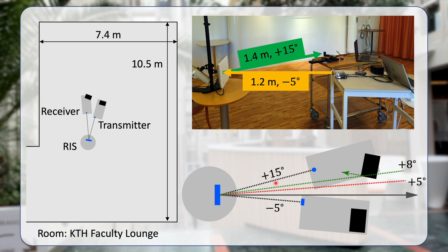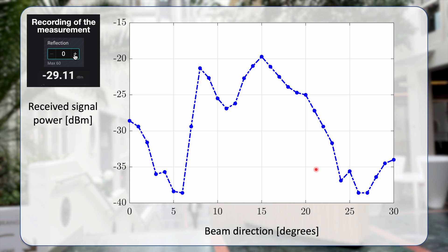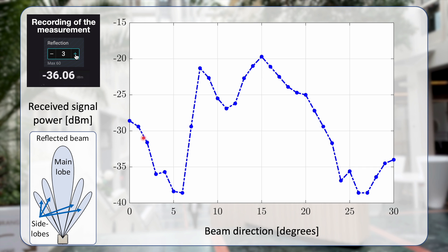This is the received signal power that we were measuring for different beam directions of our reflection. We first see how a small side lobe is hitting the receiver. But when we are changing the reflection angle up to 5-6 degrees, we are hitting the noise floor over here. Then the signal power that we are receiving is increasing again because we see a reflection on the laptop.